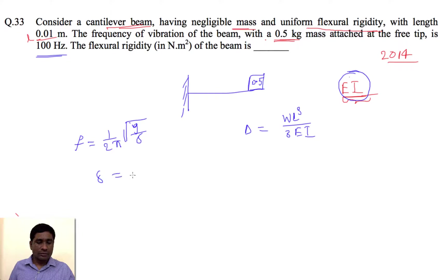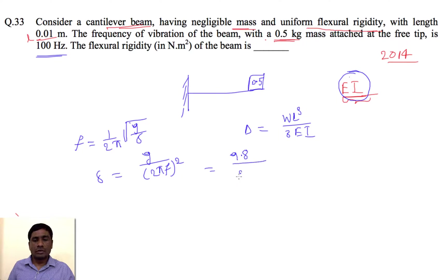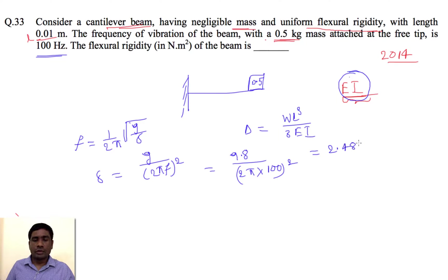From these equations we can write delta = g / (2πf)². Substituting values: 9.8 divided by (2π × 100)² gives delta equal to 2.48 × 10⁻⁵ meters.